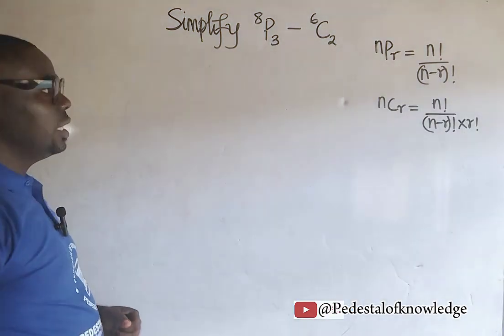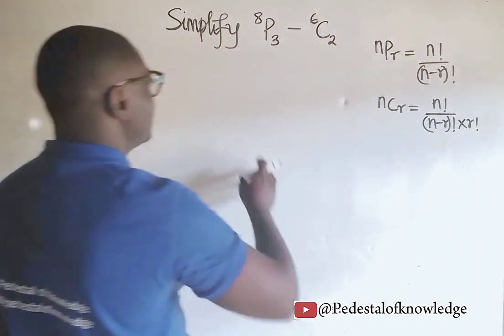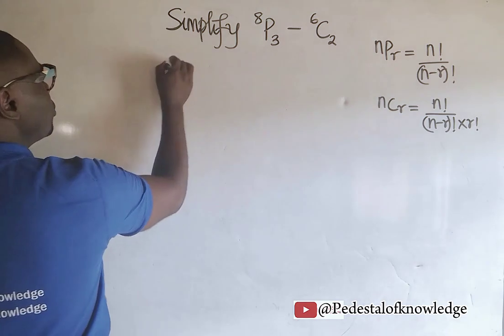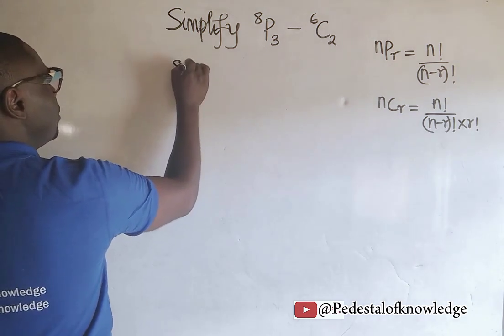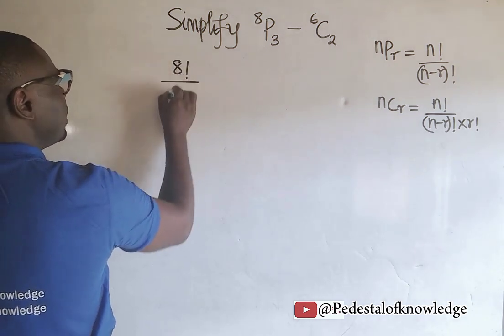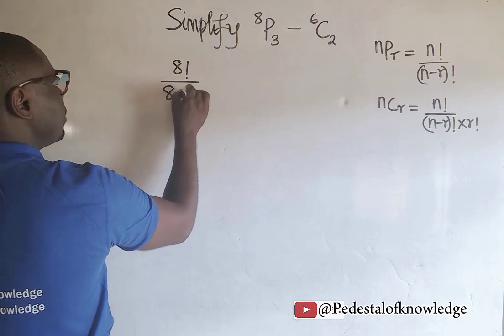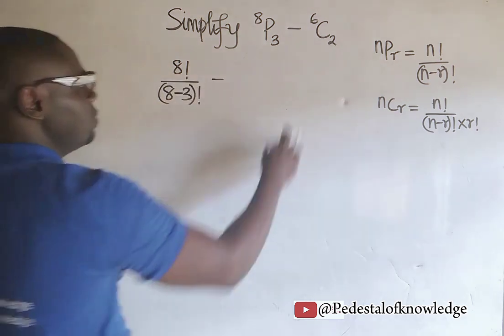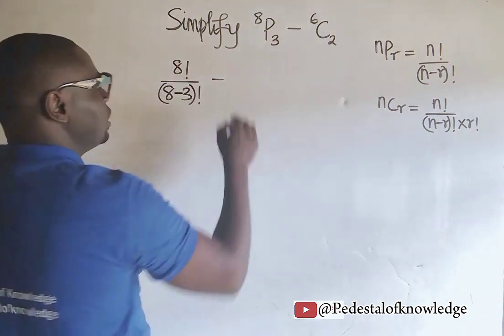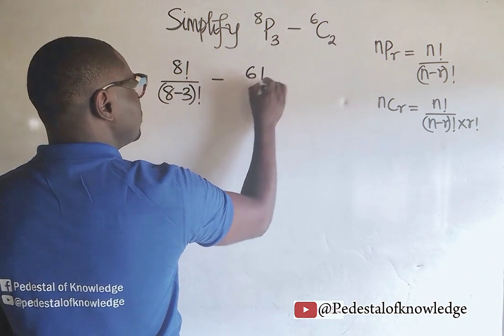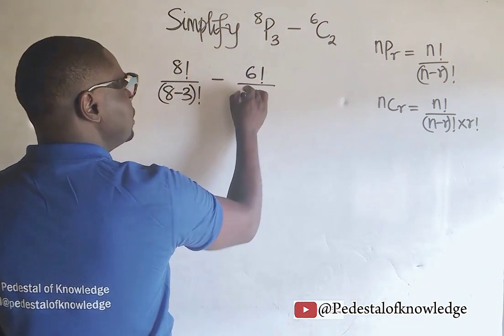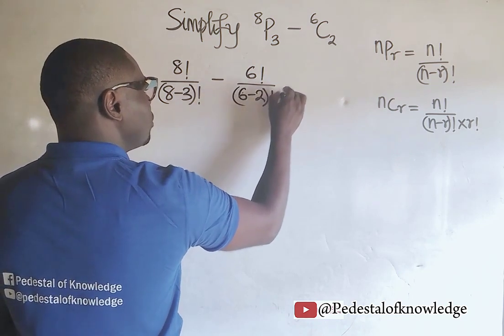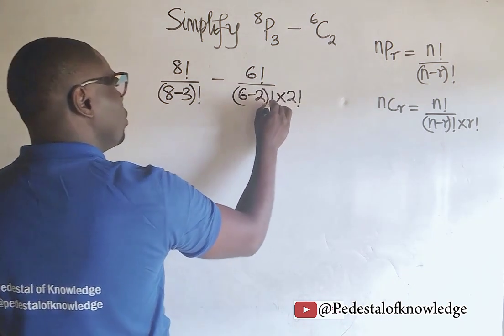We are going to engage these relationships here to get our answer. So 8 permutation 3 is equal to 8 factorial divided by 8 minus 3 factorial. Then minus 6 combination 2 is equal to 6 factorial divided by 6 minus 2 factorial multiplied by 2 factorial.